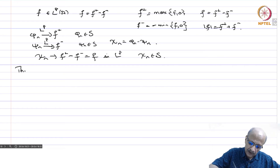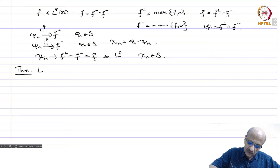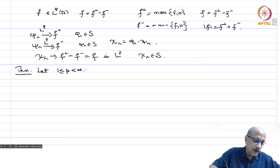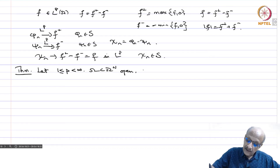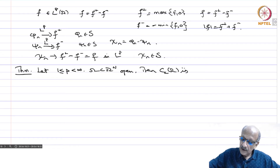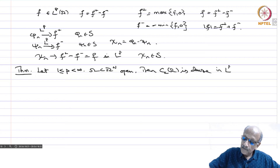This leads us to an important theorem which we will repeatedly use: for 1 less than or equal to p less than infinity, with omega open in Rn, Cc of omega is dense in Lp of omega.